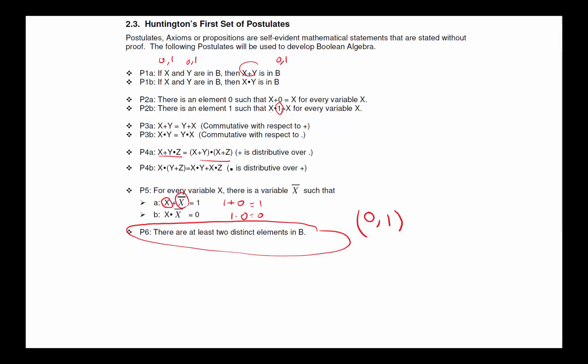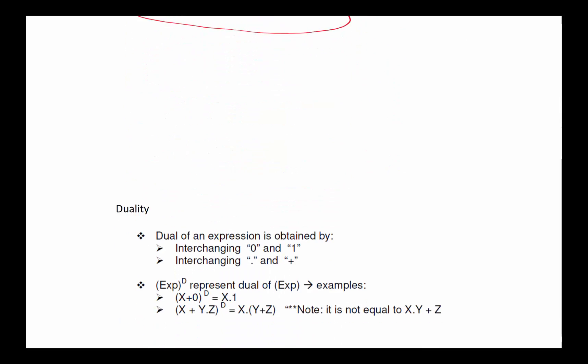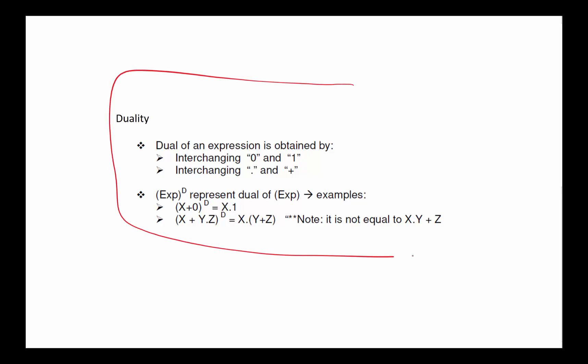Before I go forward, you may have noticed something kind of interesting here. You can see that for every postulate I have an a and a b. And you notice that when we go from one to the other, the one thing that changes is the OR changes to AND, AND changes to OR. And later on we'll see that one changes to zero and zero changes to one. This idea is referred to as duality. And the duality basically says if you have a relationship, its dual is also correct. And what is a dual of something? Dual of something is when I can take every time I see a zero I replace it with a one, every time I see an AND I replace it with an OR, or back and forth.